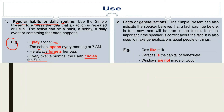Here is an example: 'Cats like milk.' 'Caracas is the capital of Venezuela.' 'Windows are not made of wood.' All three of these sentences are facts or ideas about some things spoken by a speaker, and the speaker may also be uncertain about whether the fact is correct or not. So, we can see that the simple present tense can be used for facts and generalizations.